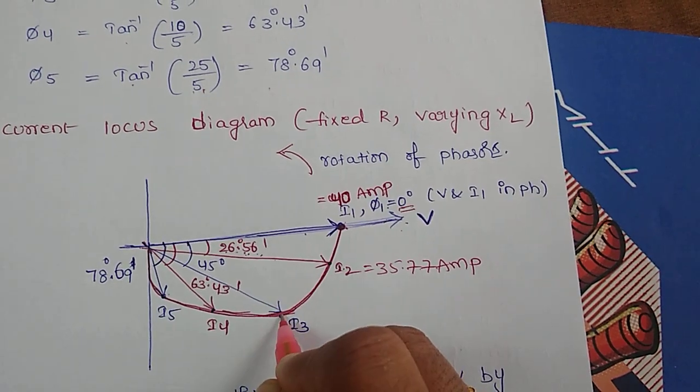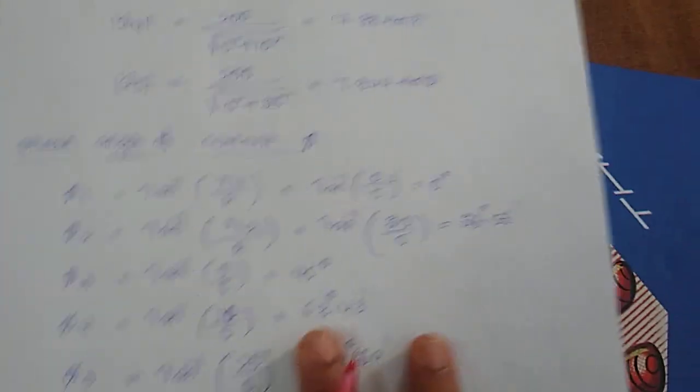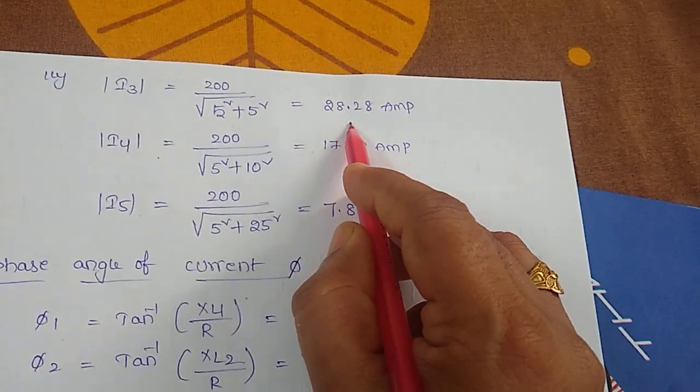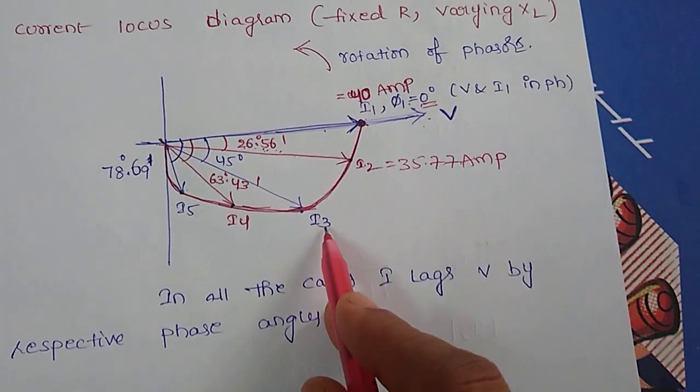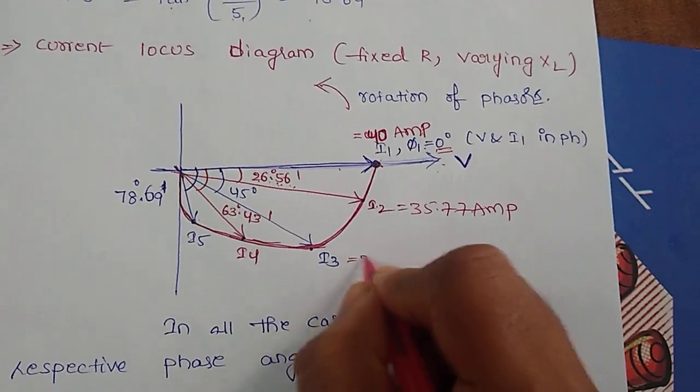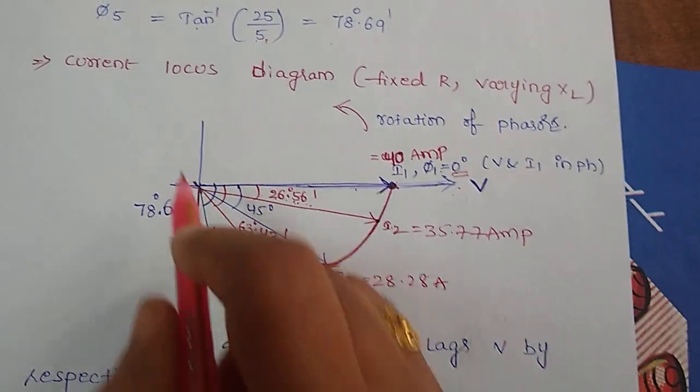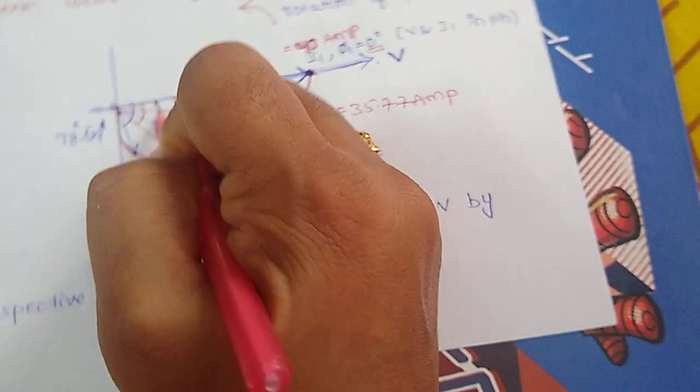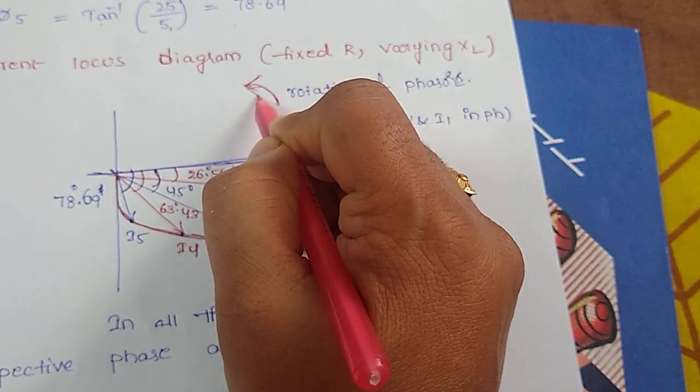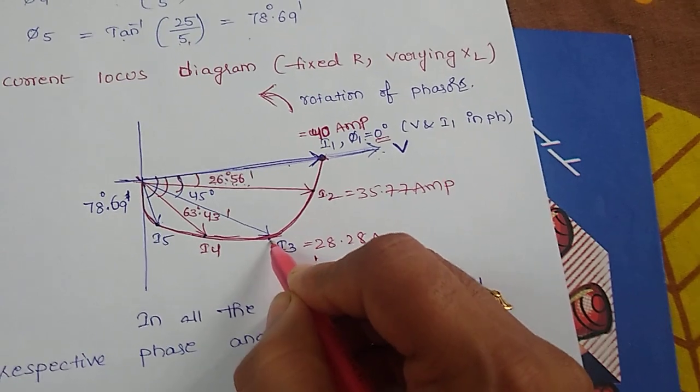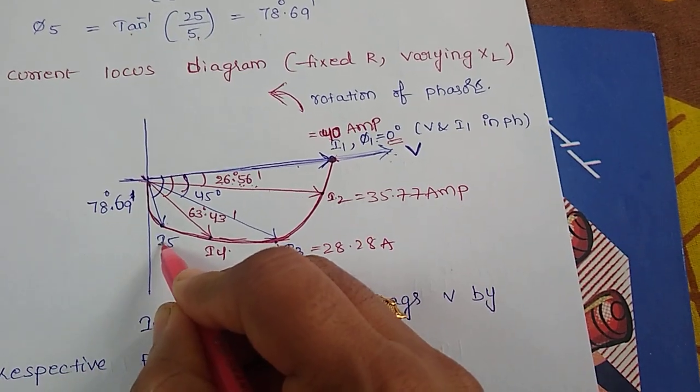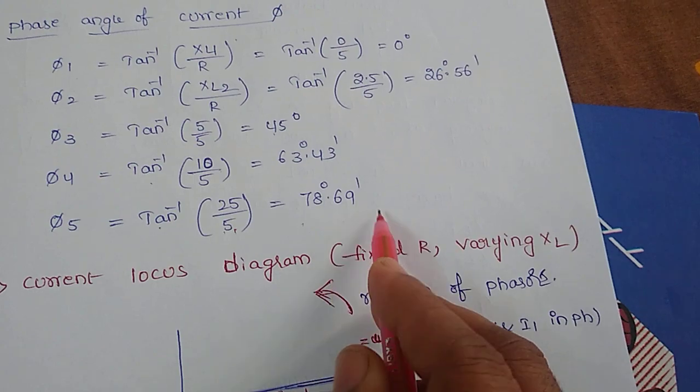Next, similarly for third phasor, I3 magnitude is 28.28 with a phase angle of 45 degrees. Since all of the phasors are rotating in anti-clockwise direction, this current phasor should lag voltage by this phase angle. Similarly I4 can be drawn, I5 can be drawn. Here I5 magnitude is 7.844 and phi 5 value is 78.69.